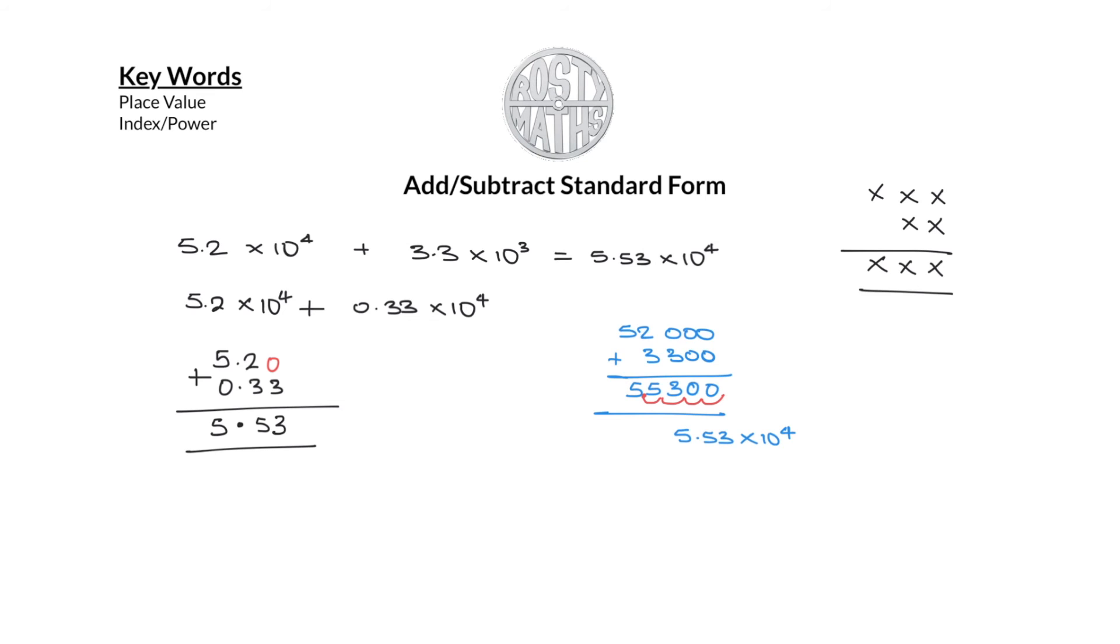And that's how you add and subtract numbers in standard form, because you will do the exact same thing we have done if you were subtracting. You need to have the same power before you attempt to subtract it, or change both the numbers into ordinary numbers. Do your subtraction and get your answer.